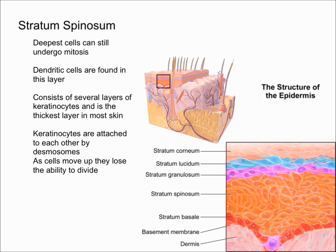Constant stress is always being put on the keratinocytes. The keratinocytes are firmly attached to each other by desmosomes, which help create a strong bond. Tight junctions also help seal off the keratinocytes to make sure nothing passes between the cells. The desmosomes hold the skin together and toughen up the epidermis by keeping the keratinocytes closely together.